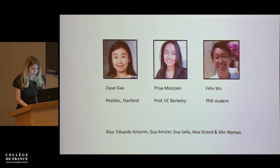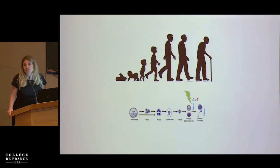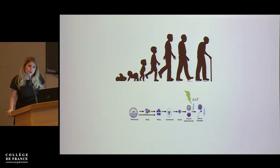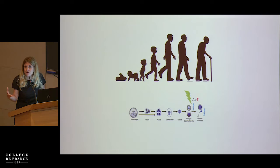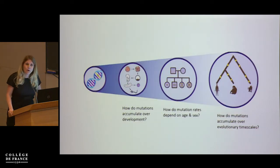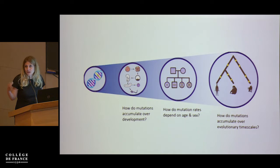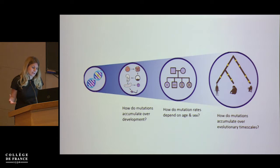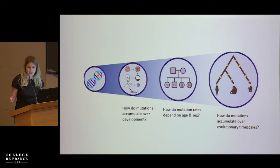I'm going to talk about germline mutation — any mutation that occurs between the zygote and sperm or zygote and egg — therefore mutations that could accumulate either in the cell lineage ancestral to the germ cell before sexual differentiation, after sexual differentiation, or in the germline. I'll focus on point mutations: how they accumulate over evolutionary time, how and why mutation rates depend on age and sex, and how they accumulate over development.